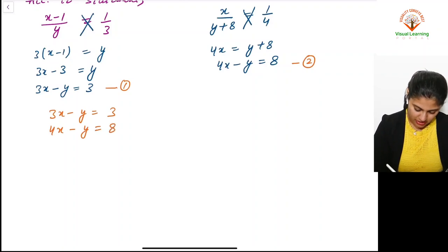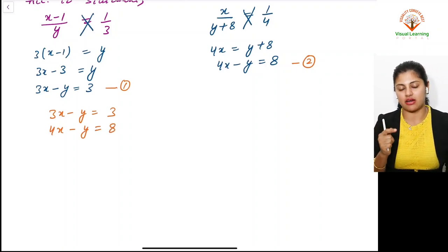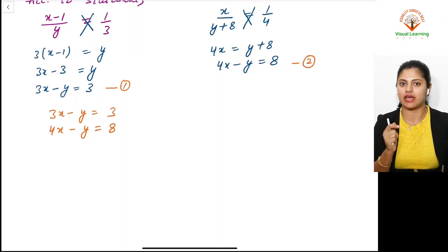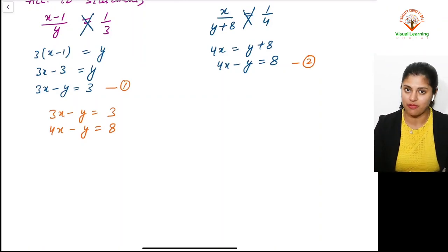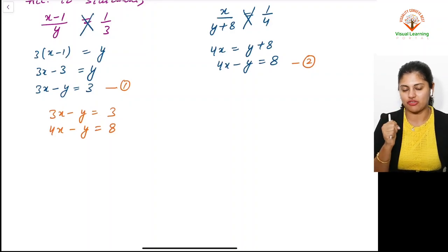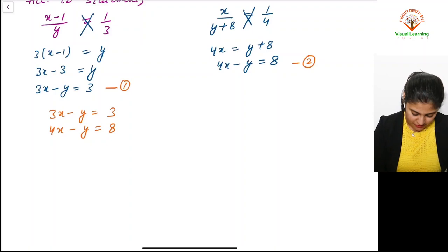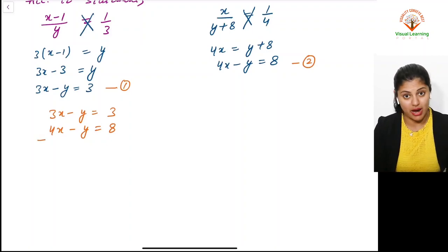In elimination method, we remove one variable, either x or y. Y is easier to remove because its coefficient is the same (1), we just change signs. 4x becomes negative, -y becomes +y, and 8 becomes -8.